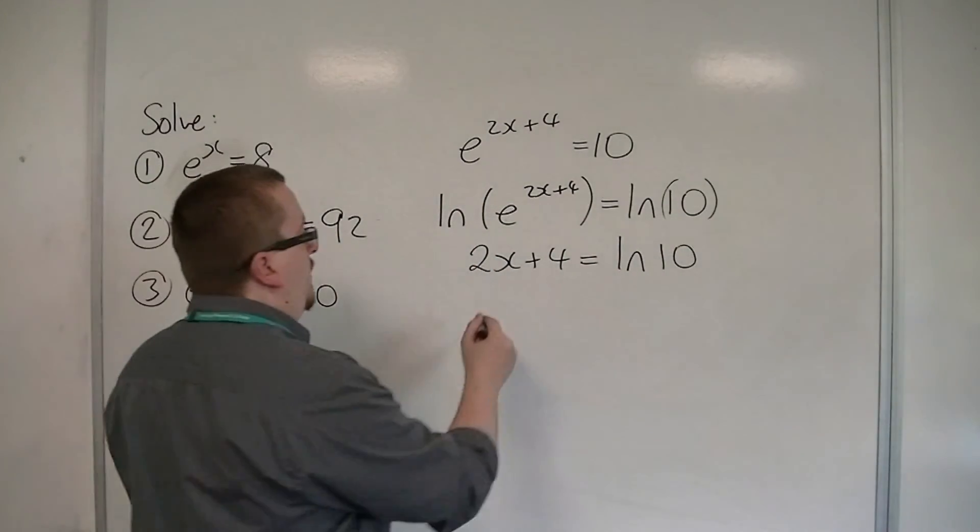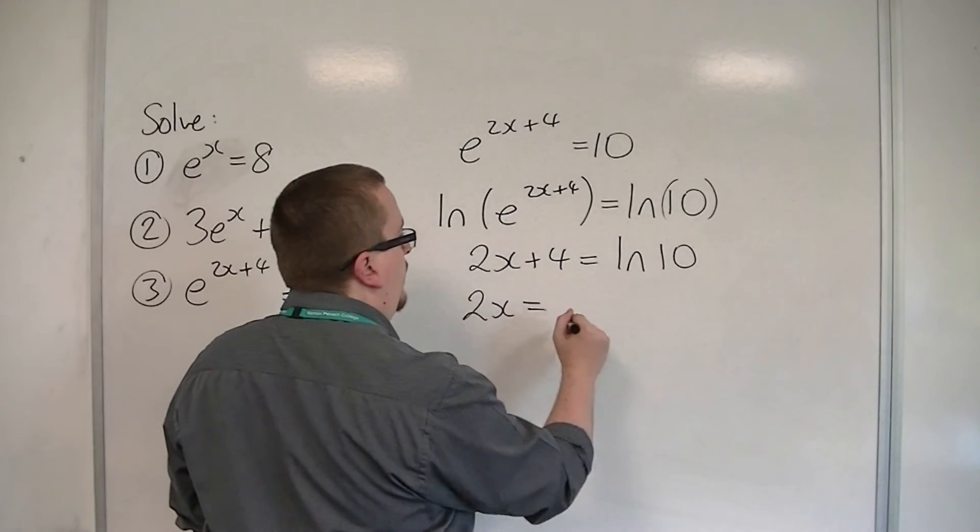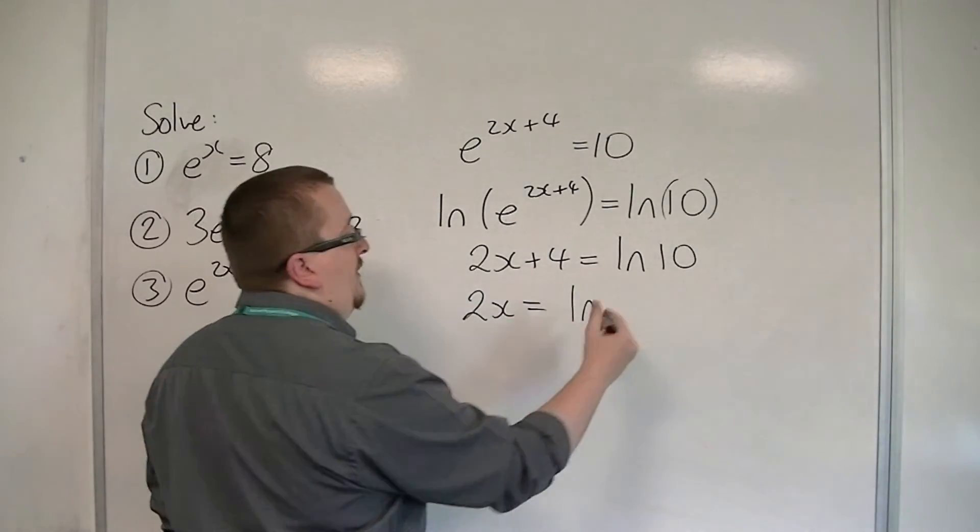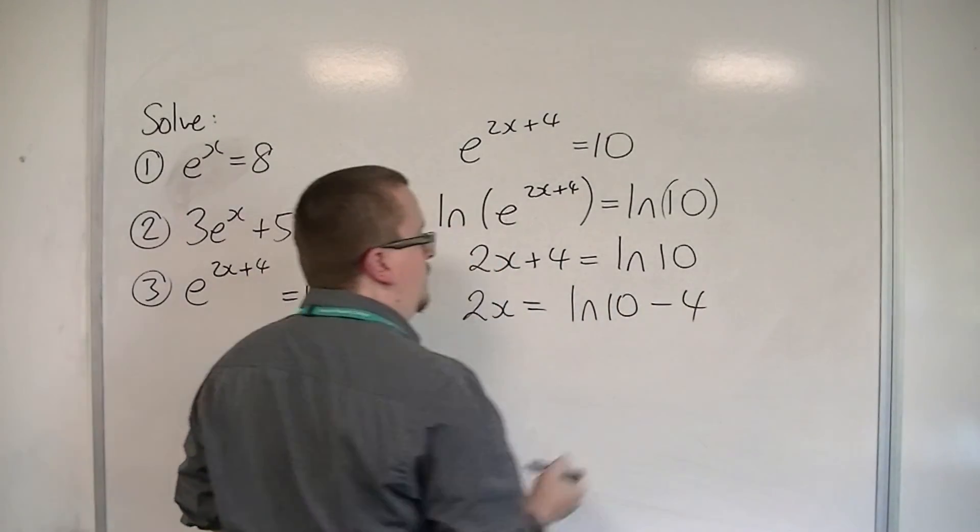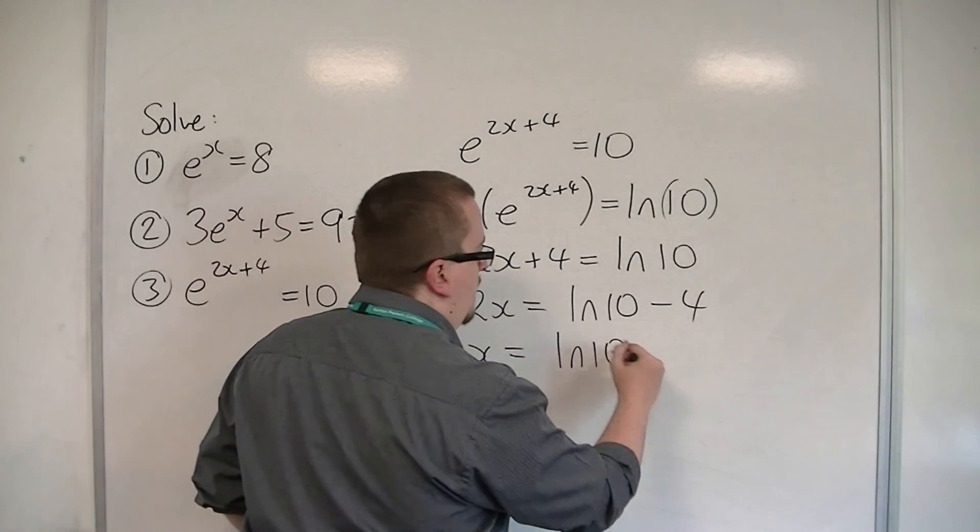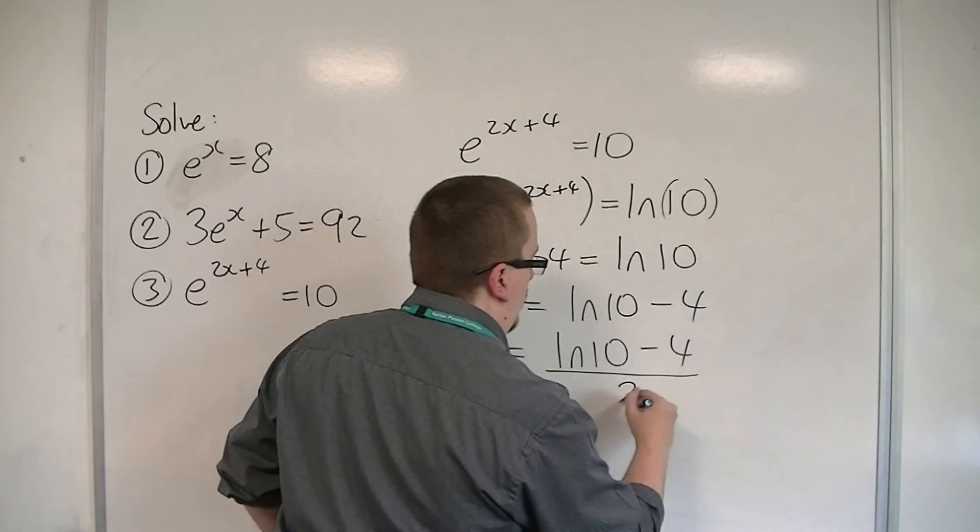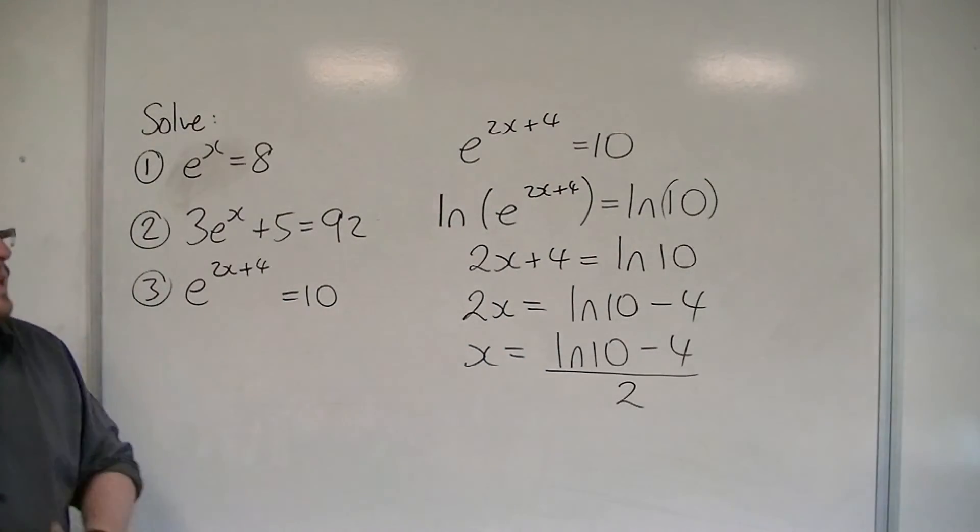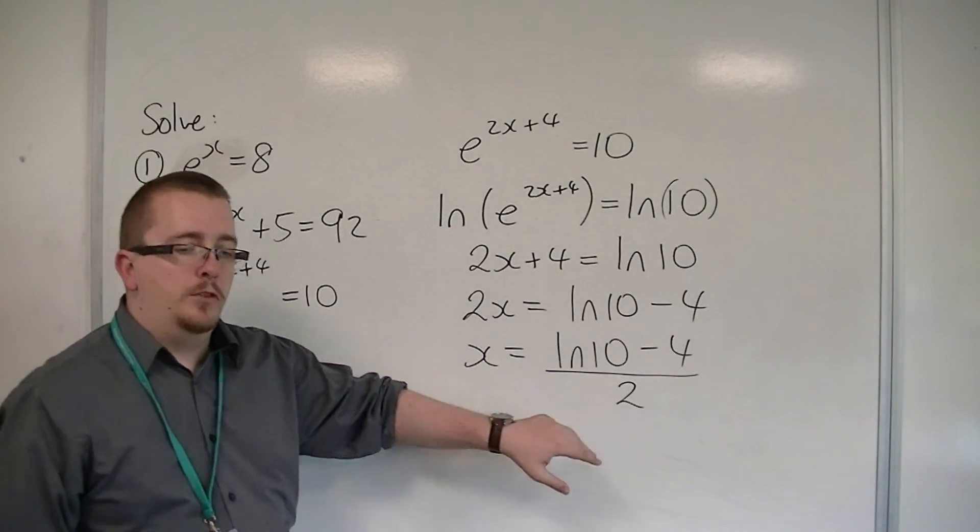So then I'm going to subtract 4 from both sides. So we have 2x is log 10, take away 4. And then I'm going to divide both sides by 2. So log 10, take away 4, all over 2. And that would be the exact answer that I would be looking for.